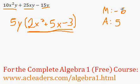Great, so those numbers will be 6 and negative 1, because 6 times negative 1 is negative 6, and 6 plus negative 1 is positive 5.